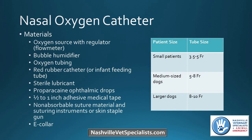Materials needed include an oxygen source with a flow meter regulator, a bubble humidifier, oxygen tubing, a red rubber catheter or infant feeding tube, sterile lubricant, proparacaine eye drops to numb the nose, tape, suture, and an e-collar. This chart is a guide for tube size depending on patient size — some large dogs have small nares and vice versa, so look at the dog's nares and try a couple of sizes if needed.